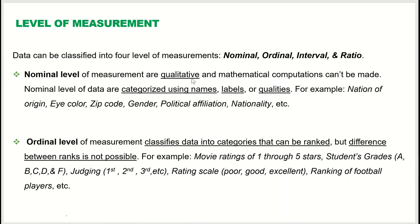The nominal level of measurement is qualitative — it does not include numbers, and no mathematical computation can be performed. Nominal-level data are categorized using names, labels, or qualities. Examples include eye color, zip code, political affiliation, nationality, and gender. These are purely qualitative data — just labels, qualities, categories, or names.